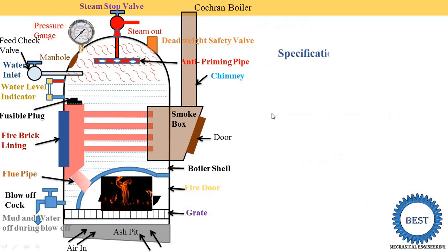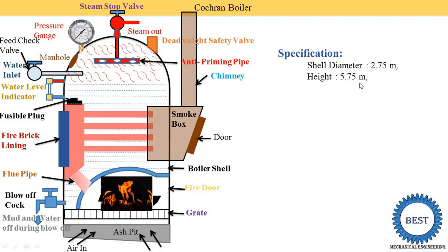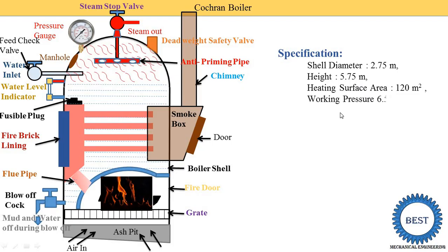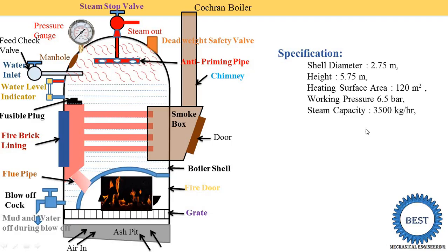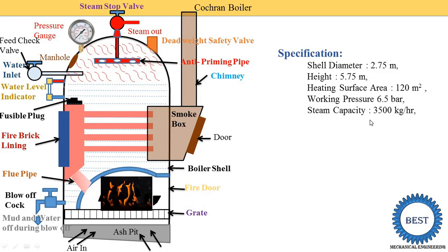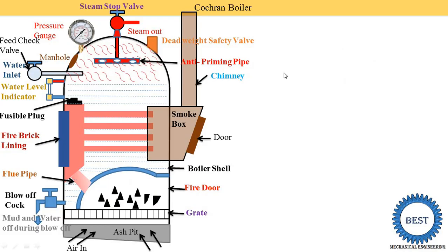The specifications of the Cochrane Boiler are: shell diameter 2.75 meters, height 5.75 meters, heating surface area 120 square meters, working pressure 6.5 bar, steam capacity 3500 kg per hour — meaning the Cochrane Boiler produces 3500 kg of steam in one hour — and efficiency 70 to 75%.